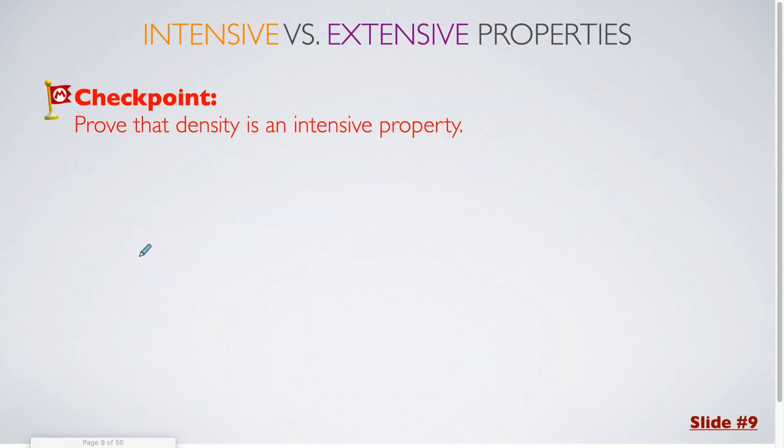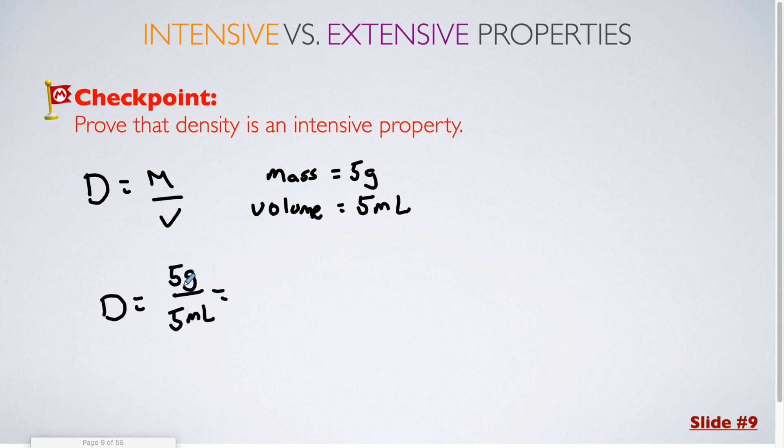Now I mentioned that we would get back to density. So for our checkpoint question here, we are going to prove that density is an intensive property. And remember, for all checkpoint questions, you should be writing out the solutions to these in a notebook. Now the equation for density is d equals m over v. So let's say that we have a hypothetical substance, which has a mass of 5 grams and a volume of 5 milliliters, just to keep the numbers simple. Now if I were to plug this into my density equation, I don't have to move any of the letters around. Everything is solved for. So I have 5 grams over 5 milliliters and of course 5 over 5 is going to be equal to 1. So 1 gram per milliliter.